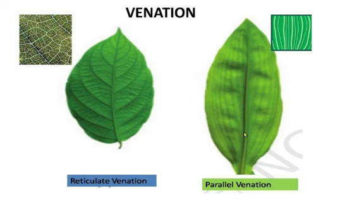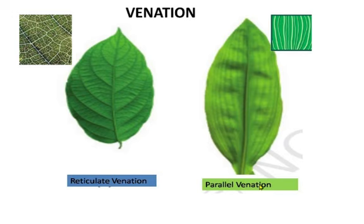In some leaves you will see a pattern — the veins do not cross each other but are parallel to each other. So this is not a net-like structure; they are arranged in parallel. This type of arrangement of veins is called parallel venation. So there are two types of venation: reticulate venation and parallel venation.